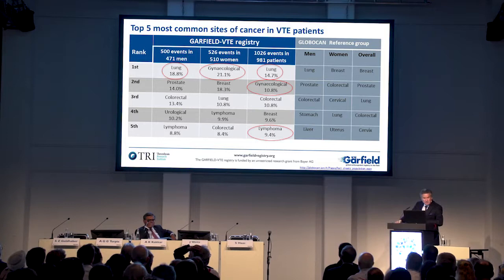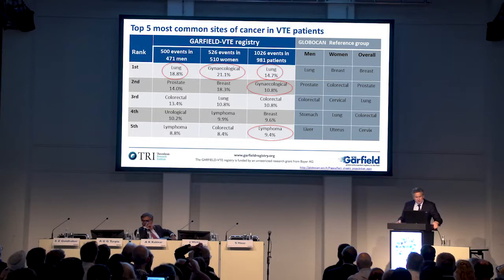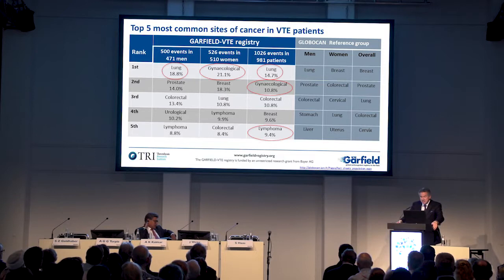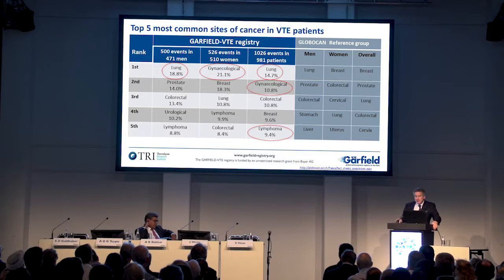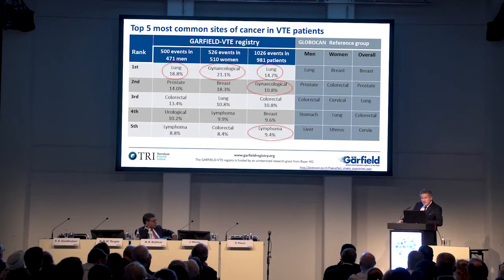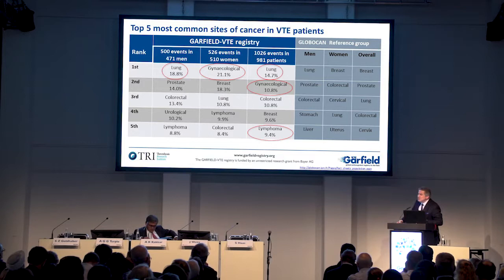Looking at the global CAN reference group — data from about 28 countries locked around 2012 — in men the top two were lung and prostate, matching our findings. In women globally it was breast and colorectal, while in Garfield VTE breast was second and colorectal was fifth. Interestingly, in Garfield VTE we're seeing lymphoma in the top five for both men and women — it's the fifth most common site overall. I think in the last few years, as we've become much more aggressive in treating lymphoma, we are seeing more VTE with hematological malignancies and not just with solid tumors.